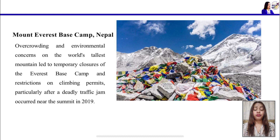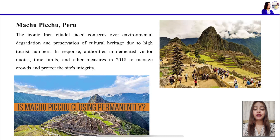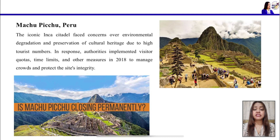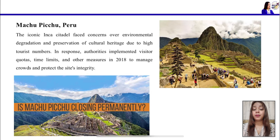Next is the Mount Everest Base Camp in Nepal. Due to very high tourist influx from mountaineers and mountain lovers, the camp was temporarily closed after a deadly traffic jam occurred in 2019. Another example is Machu Picchu in Peru — one of the seven wonders of the world — which was closed in 2018 due to massive tourist overcrowding. Authorities initially introduced visitor quotas and time limits before ultimately closing it temporarily for recovery.